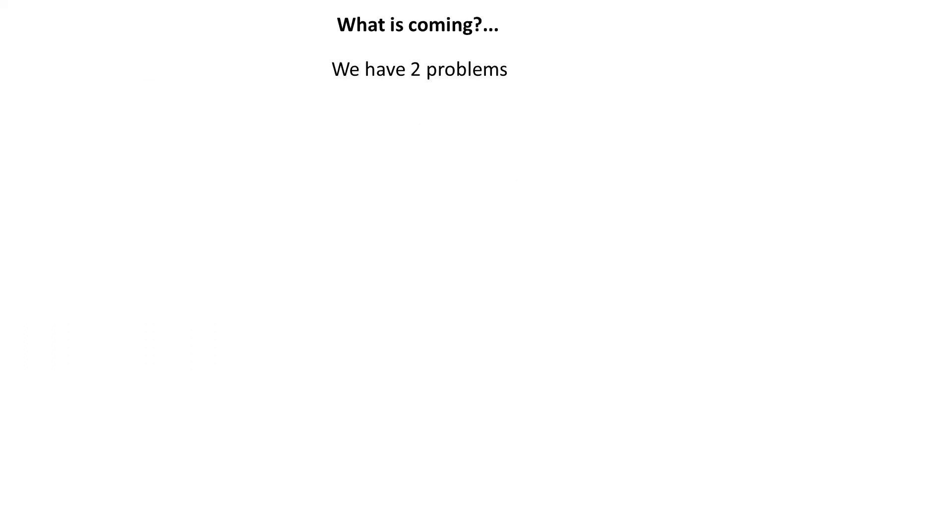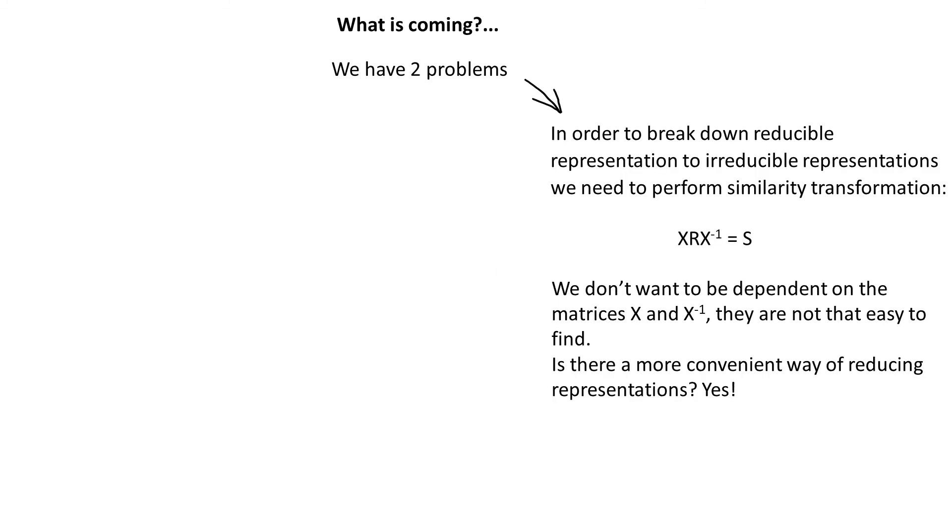Lastly, let's acknowledge that we have some problems. First, how to find out the matrix X suitable for the similarity transformation? The answer is that they are not easy to find and ideally, we want to find a more convenient way of reducing representations that does not depend on the matrix X. We will be talking about it in the next video.